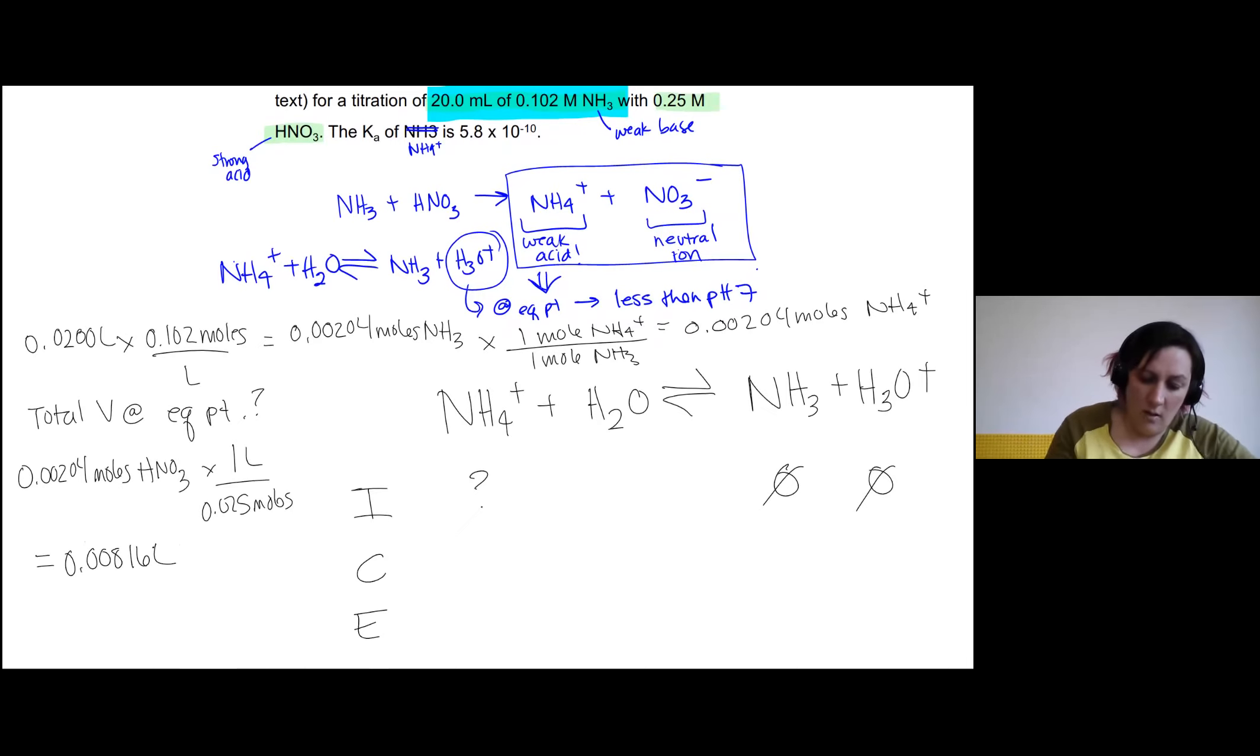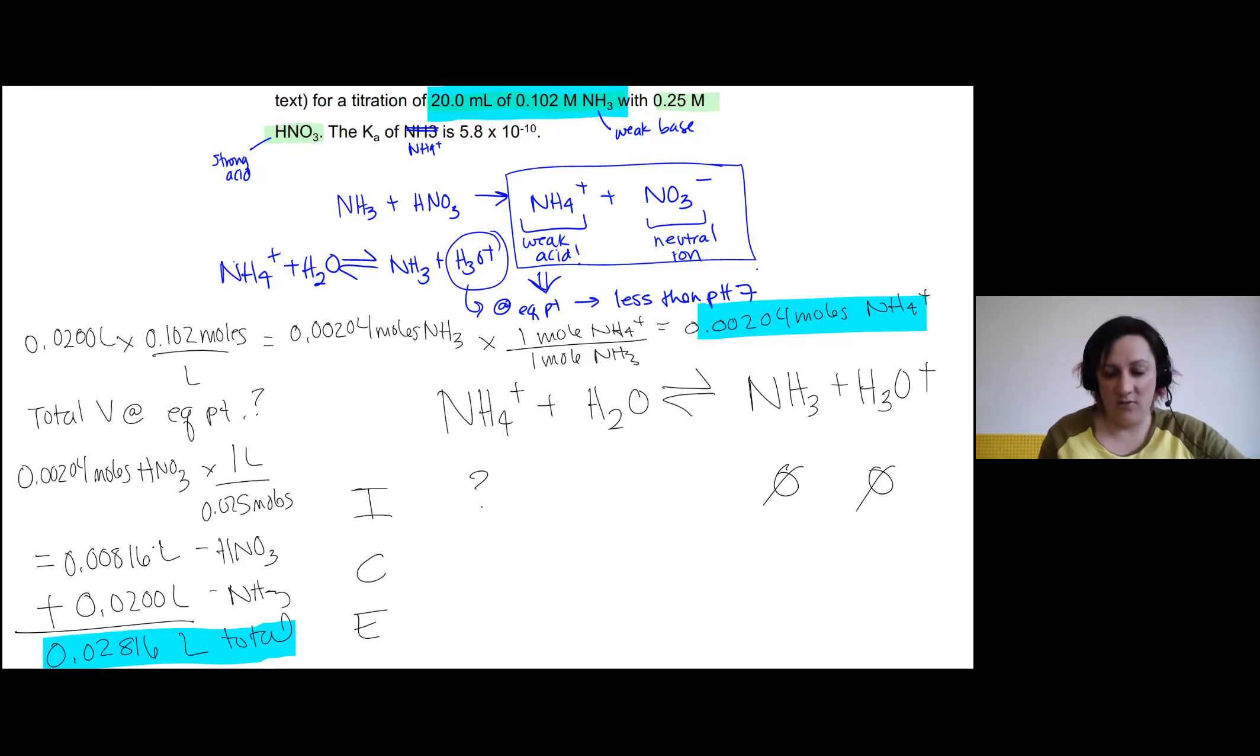Okay, so we have a volume and we have a number of moles. Sorry, that's not the volume for the total, that's just the volume for our HNO3. So we're going to add to that the volume of the ammonium that we added, which is at 20 milliliters, so 0.0200. And so we're going to have 0.02816 liters total.